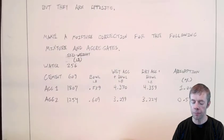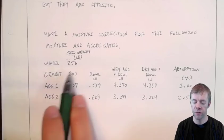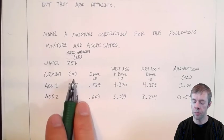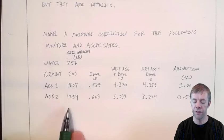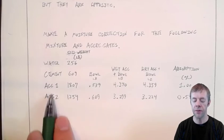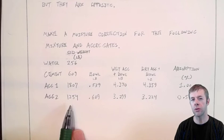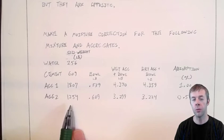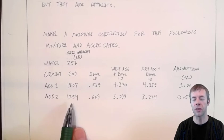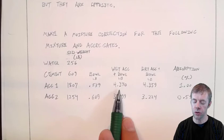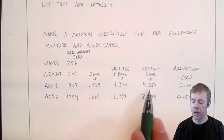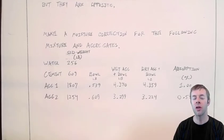So here we go — let's do an example problem. We're going to make a moisture correction for the following mixture. This mixture has 256 pounds of water, 609 pounds of cement, 1,807 pounds of aggregate number one, and 1,254 pounds of aggregate number two — that's like the coarse aggregate and the fine aggregate. These are all pounds per cubic yard. When we design concrete mixtures, we usually design for pounds per cubic yard or kilograms per cubic meter. These are all SSD weights — saturated surface dry weights — and that's really important. It makes the moisture corrections a lot easier to do. We also have weights for the bowl, the bowl plus wet aggregates, the bowl plus dry aggregates, and the absorption capacity.